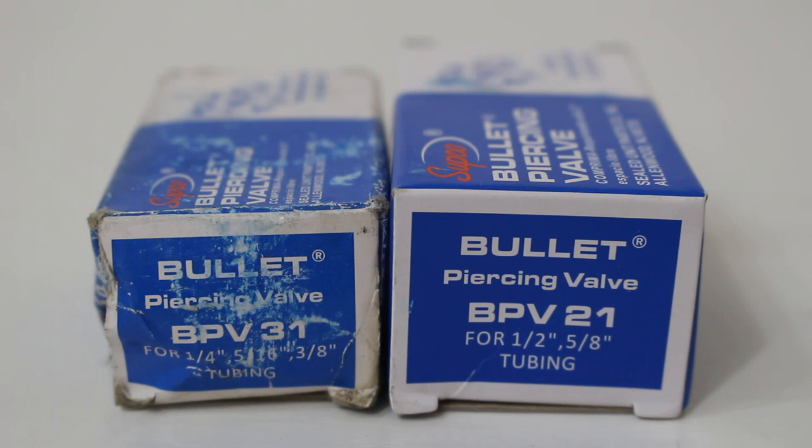Here we have two packages. On the left side is the bullet piercing valve BPV31, where you can use it for 1/4", 5/16", and 3/8" tubing. And on the right, we have the BPV21, where we can use it for 1/2" and 5/8" tubing.